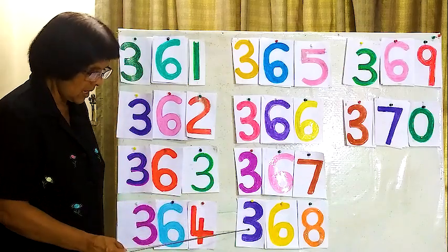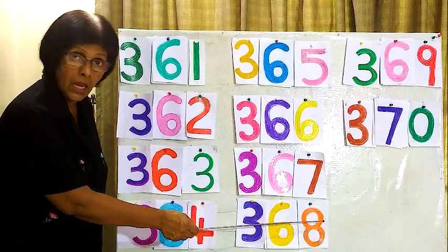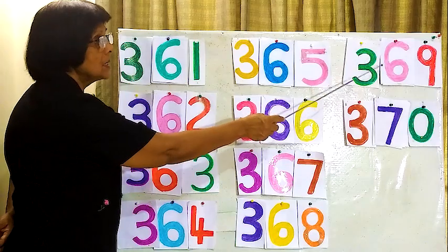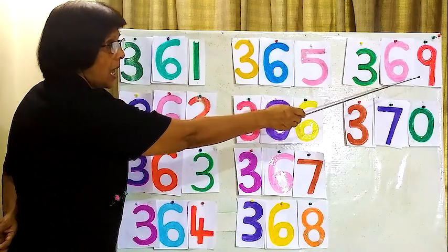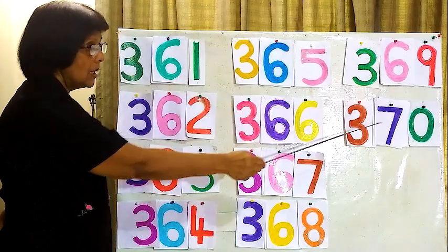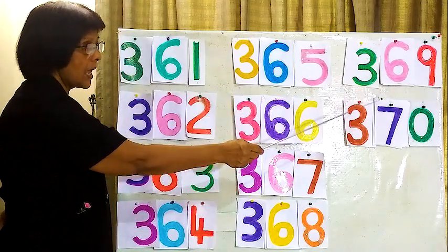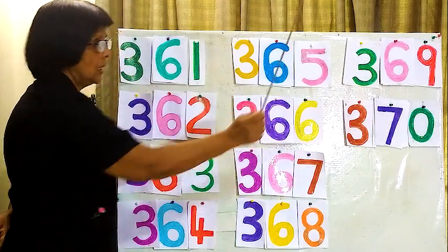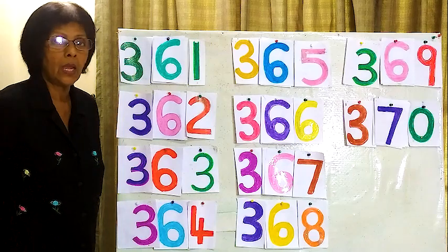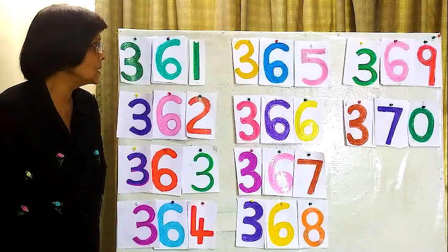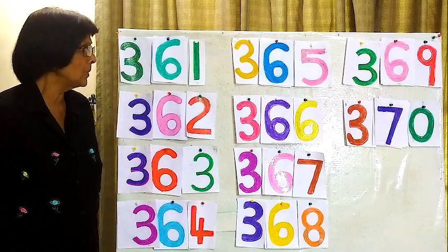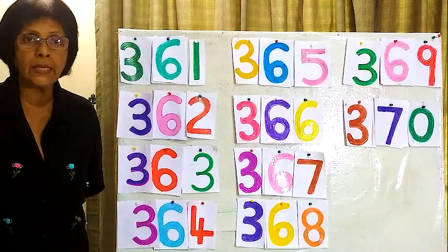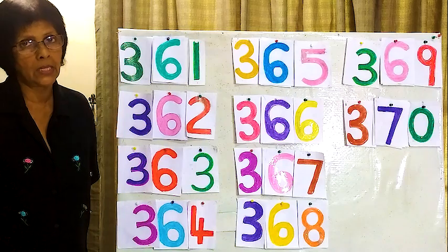Three hundred and sixty eight, three hundred and sixty nine, three hundred and seventy. Okay, that is from three hundred and sixty one to three hundred and seventy.